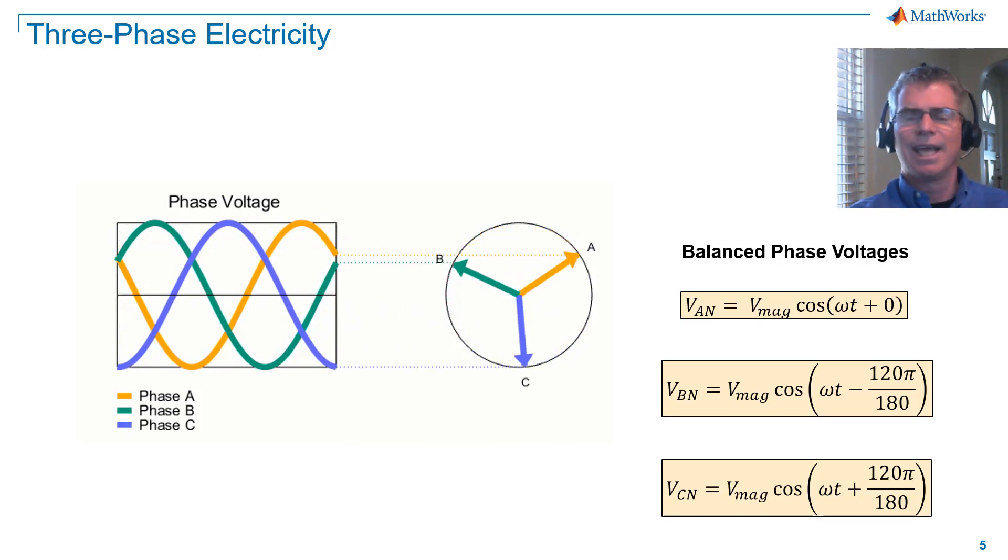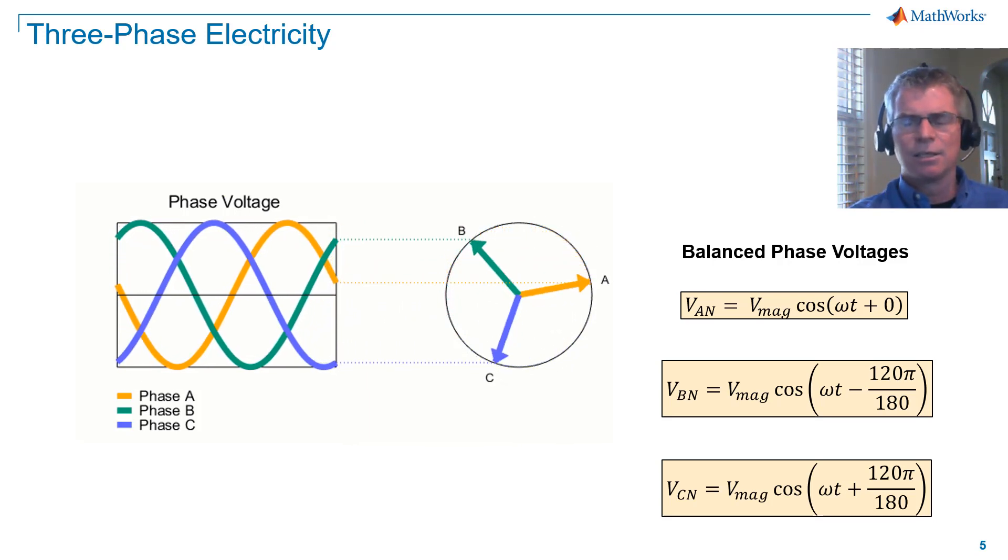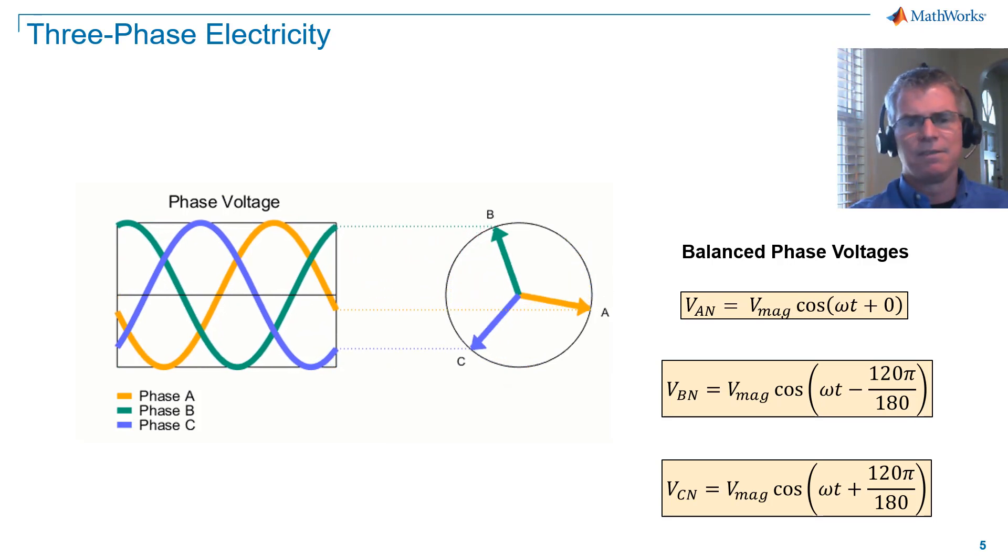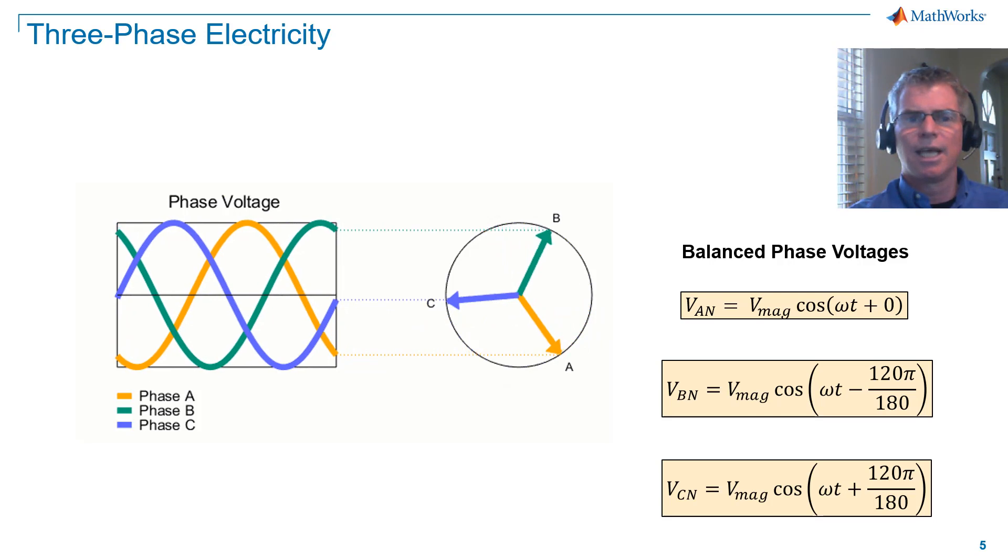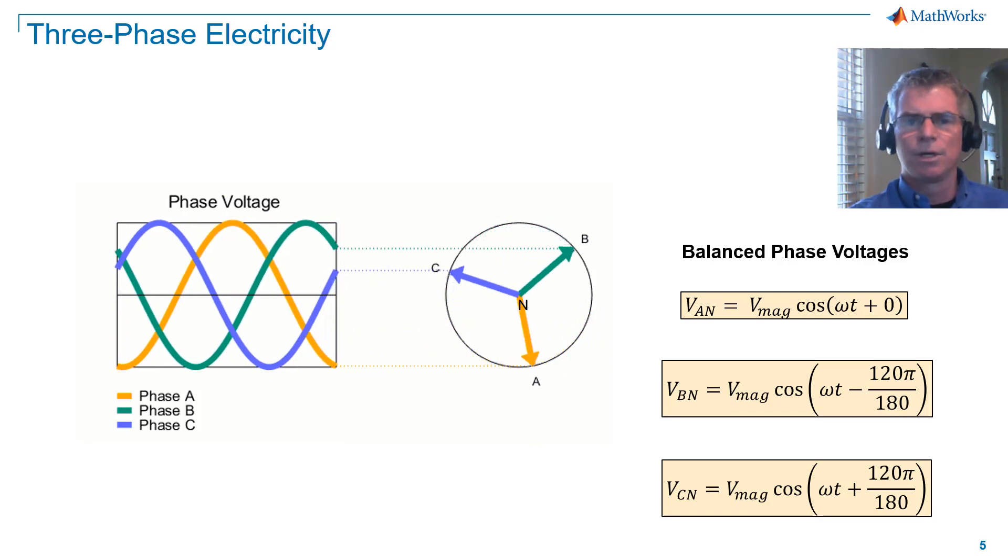Notice that I am using the notation V-AN, V-BN, and V-CN. N stands for neutral, which is the connection point of the vectors at the origin.